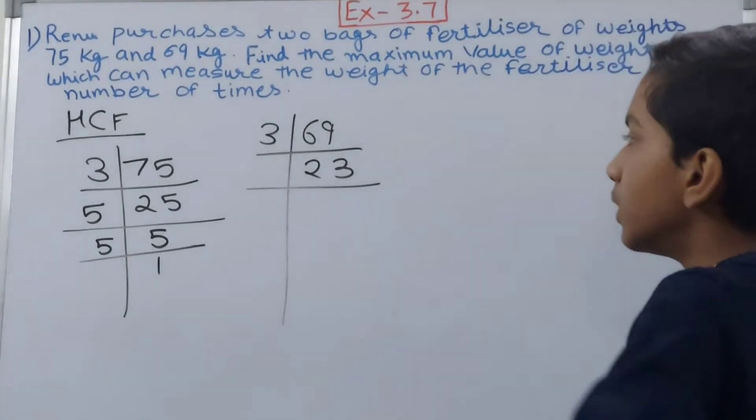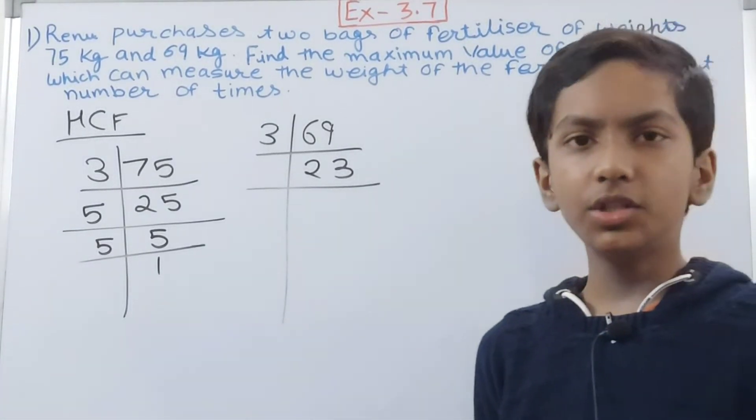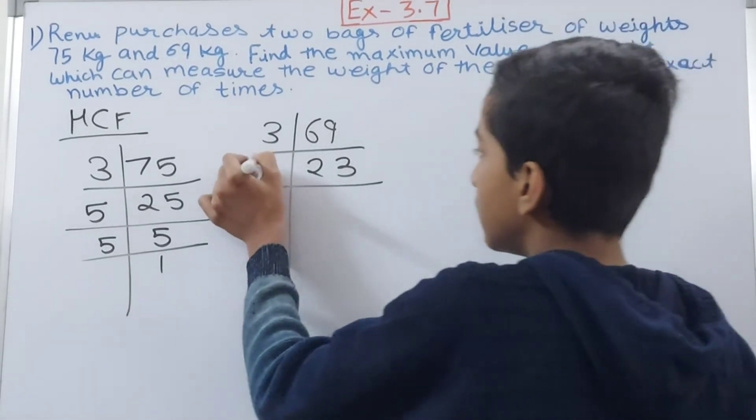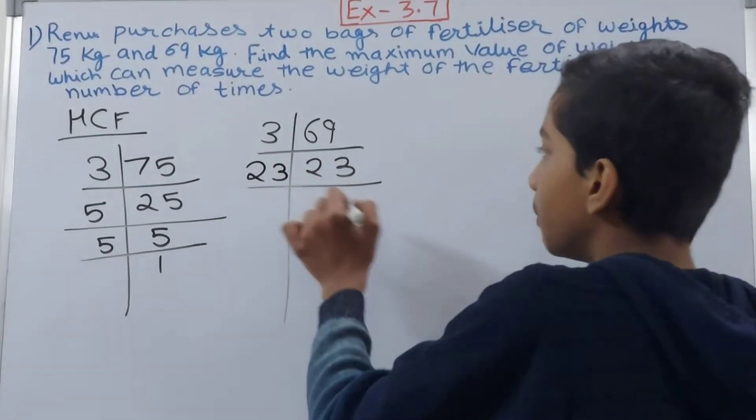And 23, will it go by 2? No. By 3 also it will not go. You know 23 is itself a prime number. So when you get a prime number, you will put that prime number and factorize it and you will get 1.